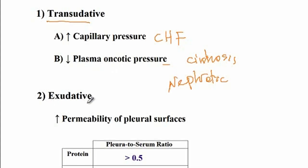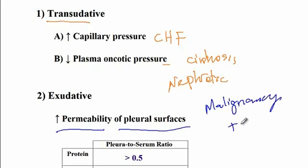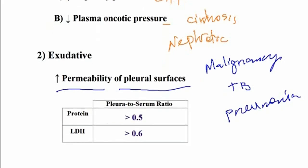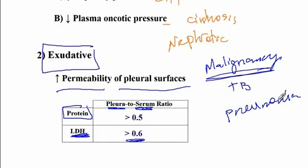The other form is exudative pleural effusion, due to increased permeability of the pleural spaces seen in malignancy, tuberculosis, and bacterial pneumonia. From pleural inflammation or disrupted lymphatic drainage, fluid leaks into the pleural space. To distinguish transudative from exudative, obtain fluid via thoracocentesis and send for analysis. If the ratio of pleural to serum protein is more than 0.5, or pleural to serum lactate dehydrogenase is more than 0.6, it indicates an exudate, raising concern for malignancy, tuberculosis, or pneumonia.